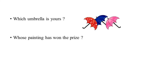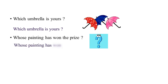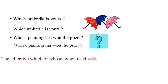Repeat the sentences after me: 'Which umbrella is yours?' 'Whose painting has won the prize?' Now we see that just as demonstrative adjectives point at a particular thing, these questioning words also point at a particular thing.